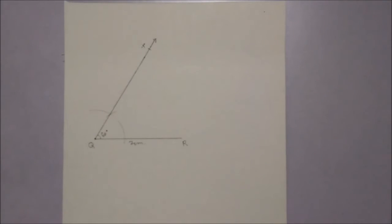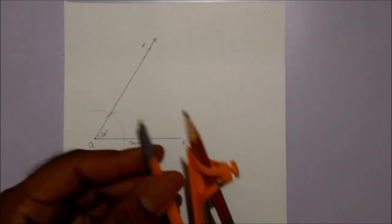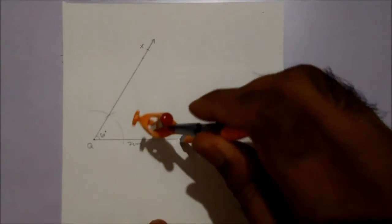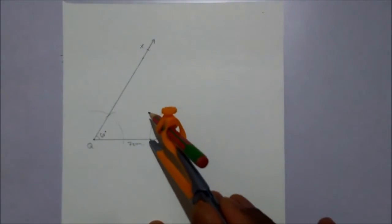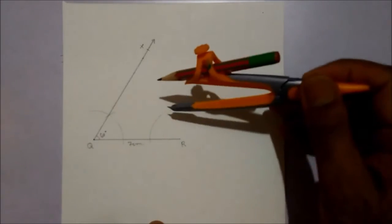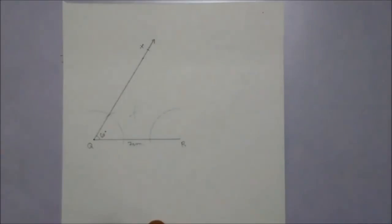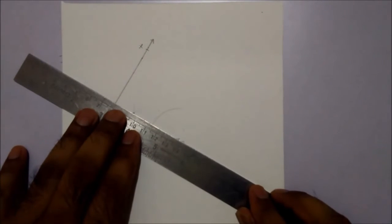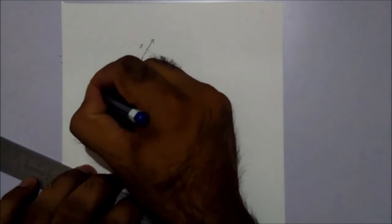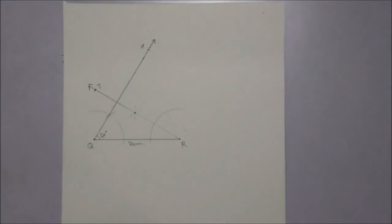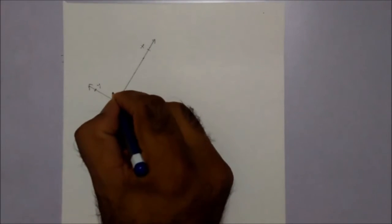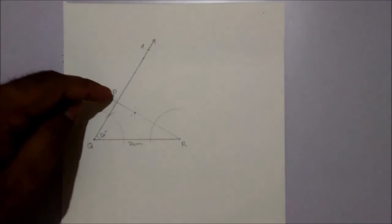Now from R, let's draw the angle 30 degree. Again take some radius. Bisect. Join this. So the intersection point, this is nothing but our point P. So this is our triangle PQR.